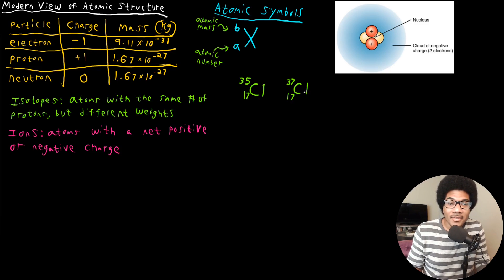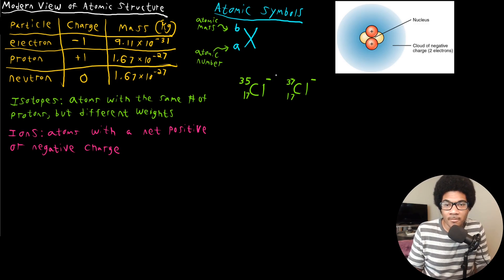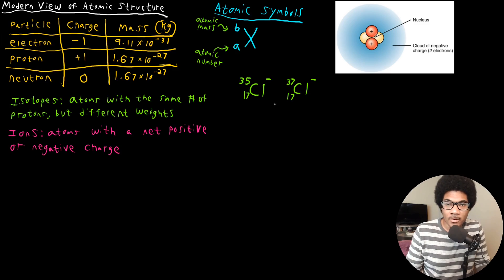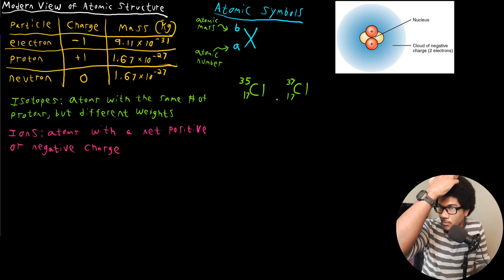This is how we denote the chemical symbols for those isotopes. If the chlorines were negatively charged, we just put the charge in the superscript. If it's negative one, we put a negative sign; if it's negative two, we write negative two, and so on. That's the general idea behind atomic symbols — you should be able to write a chemical symbol given the number of protons, neutrons, and charge.